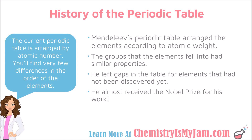Mendeleev's periodic table arranged the elements according to atomic weight, while the current periodic table arranges them according to atomic number. Even though they are arranged by different numbers, you will find very few differences in the order of the elements between the two. When he arranged elements according to atomic weight, the groups that the elements fell into had similar properties, which allowed him to leave gaps in the table for elements that had not been discovered yet.